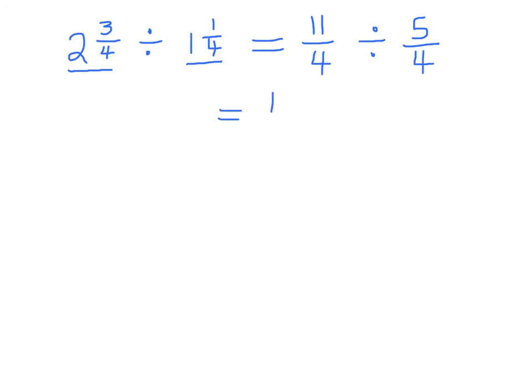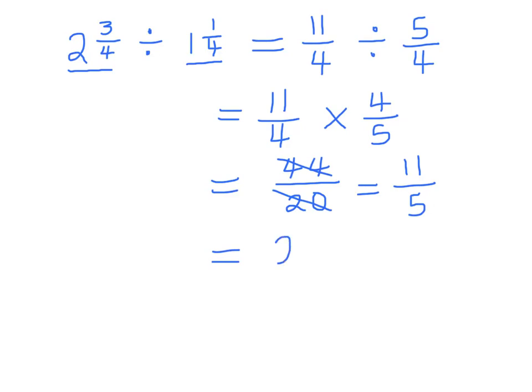Turning the division problem into a multiplication problem, this becomes multiply this by 4 over 5. And if you do the multiplication, 11 fours are 44, divided by 20. Reducing this down, 4 divides in above and below the line. So 4 in there goes 11, 4 in there goes 5. And just rewriting it as a whole number, 5 divides into 11 twice, and the remainder is one-fifth. So the answer is 2 and one-fifth.